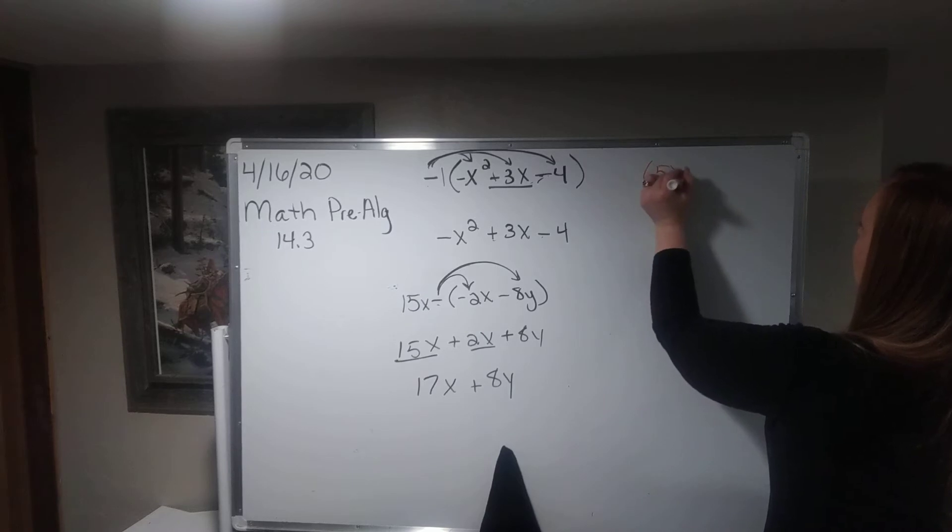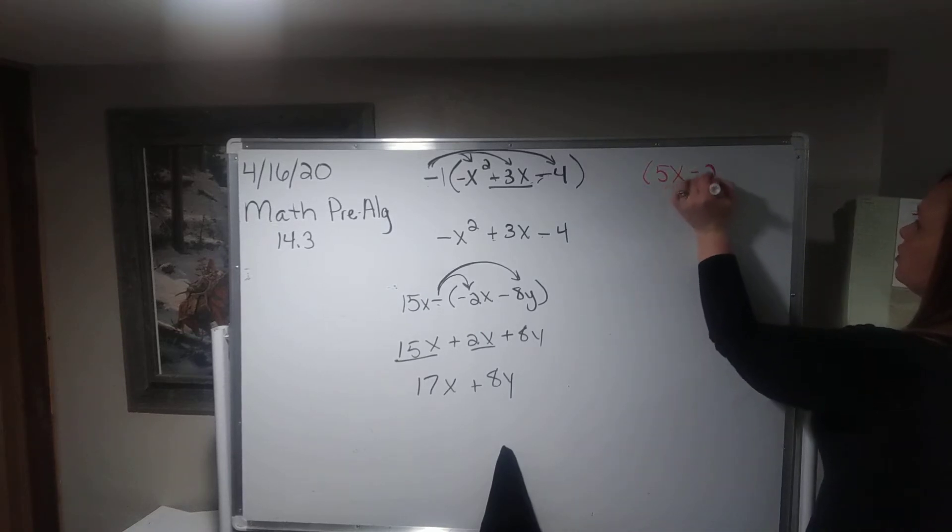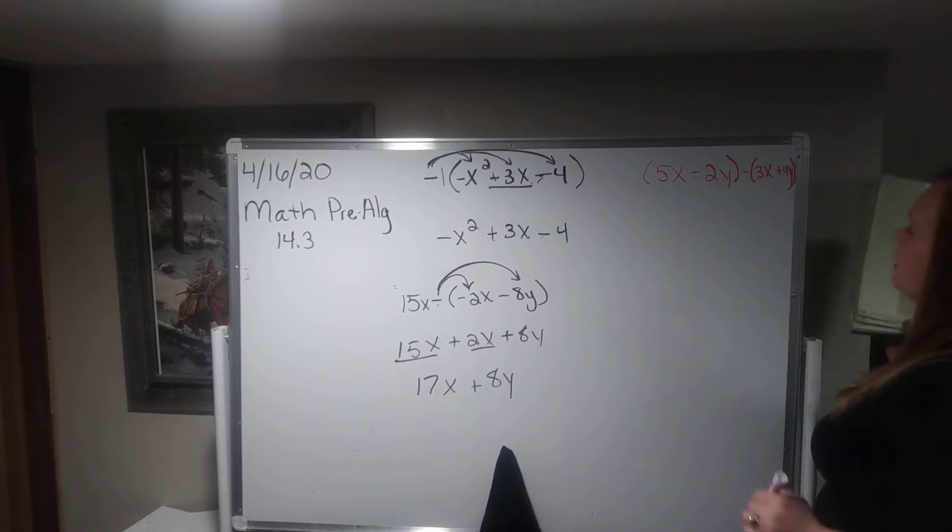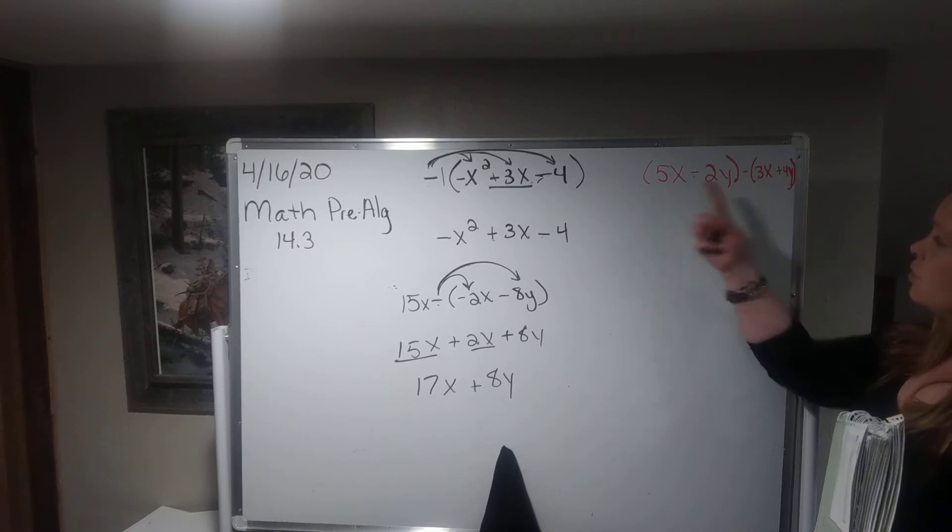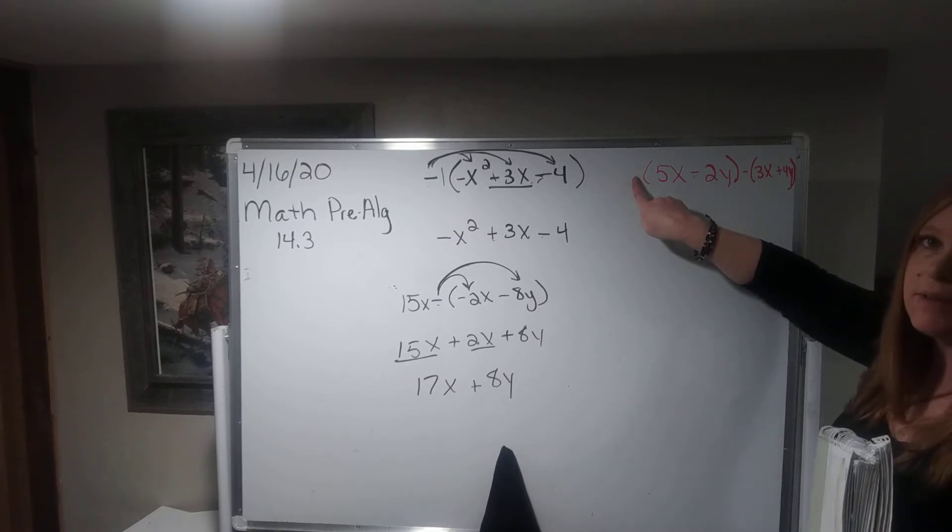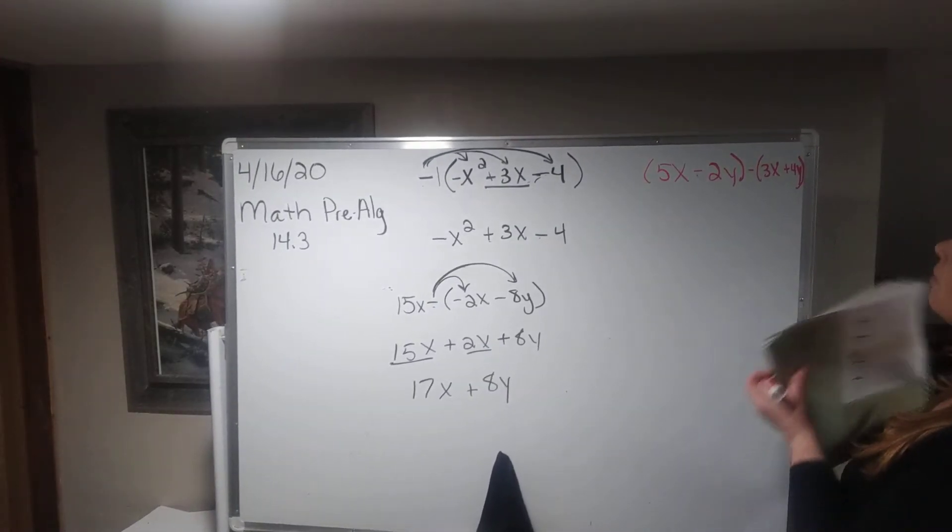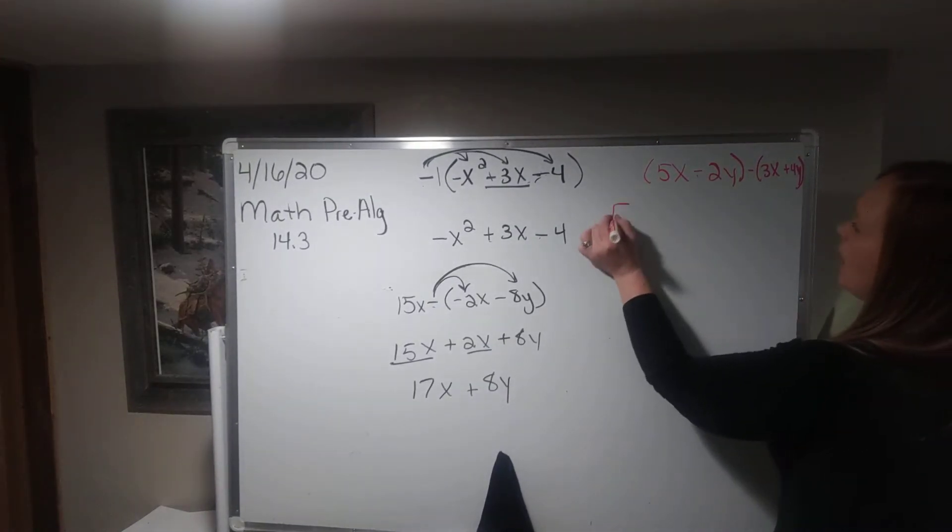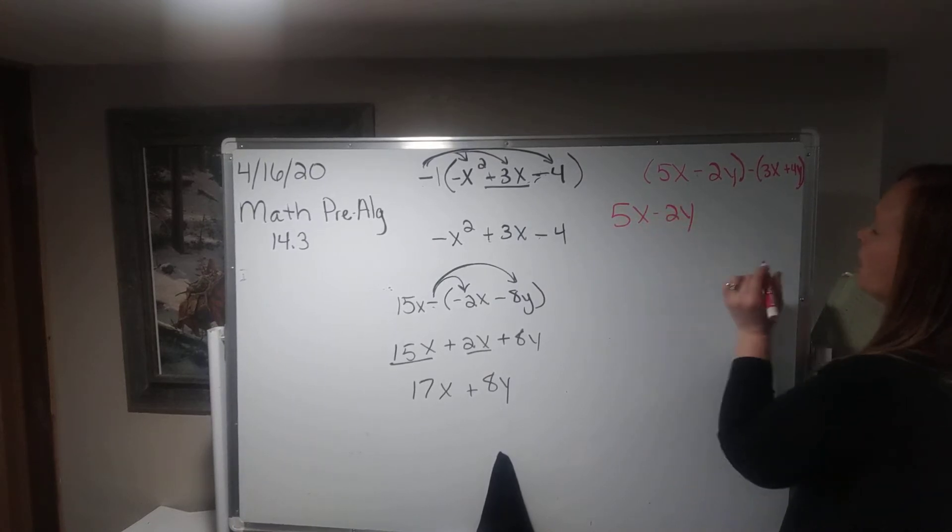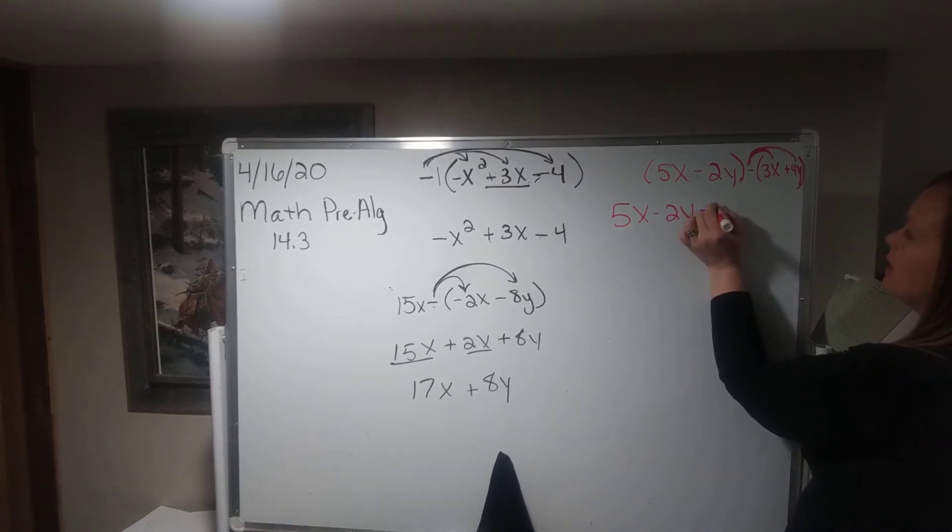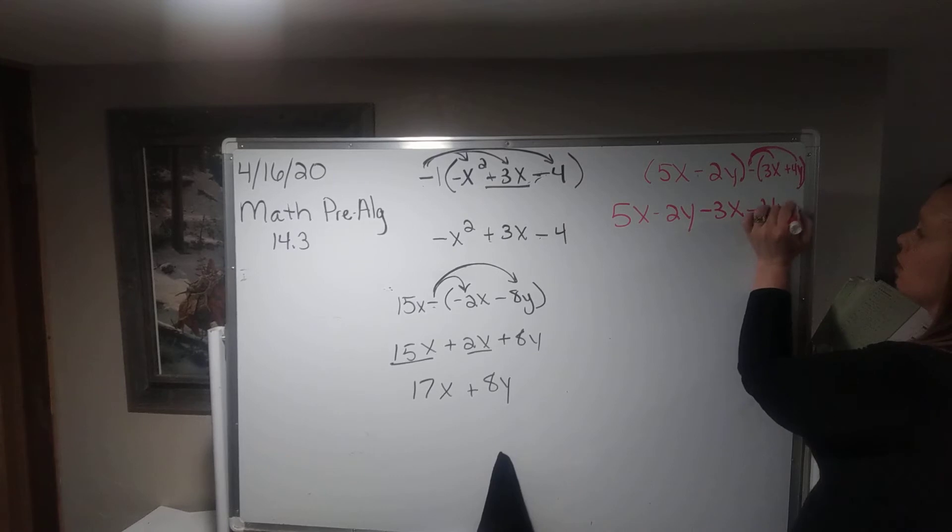Let's see, 5x minus 2y minus 3x plus 4y. I almost didn't give myself enough room there. Okay, so we have this subtraction problem. Now, if you'll look, it's positive outside of this parentheses. So I can go ahead and drop the parentheses and have 5x minus 2y, but then I need to distribute this negative inside and change the sign. So I would get minus 3x minus 4y.